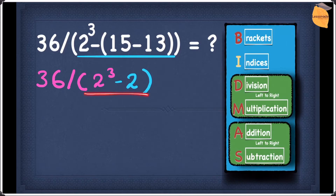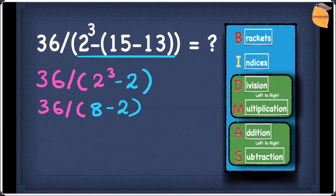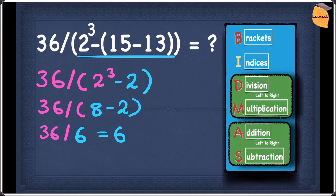Now we finish the outer bracket. In this bracket we have indices (2 cubed) and subtraction. Since indices is higher than subtraction, we do indices first — 2 cubed gives 8. So rewriting: 36 divided by, bracket, 8 minus 2. 8 minus 2 gives 6. So we now have 36 divided by 6, which gives an answer of 6. So the answer for this question is 6.